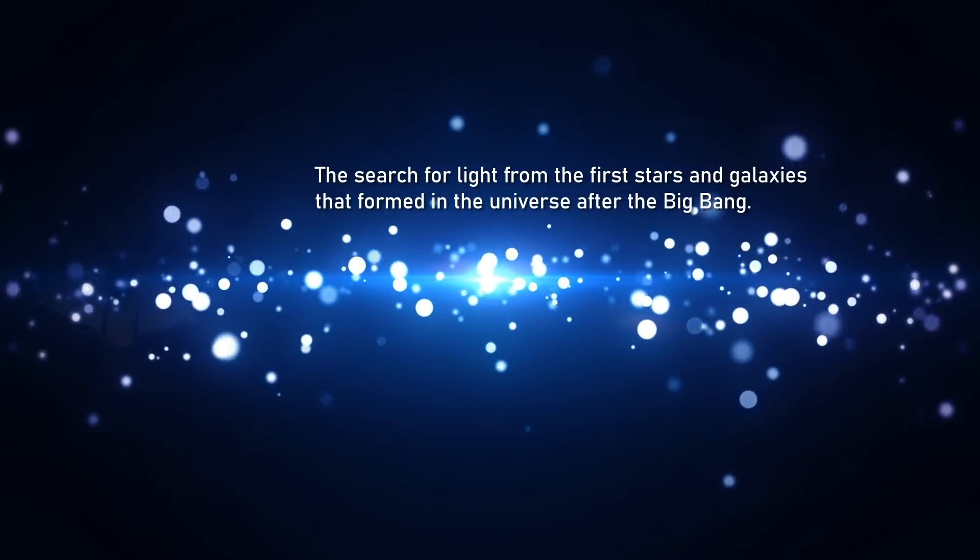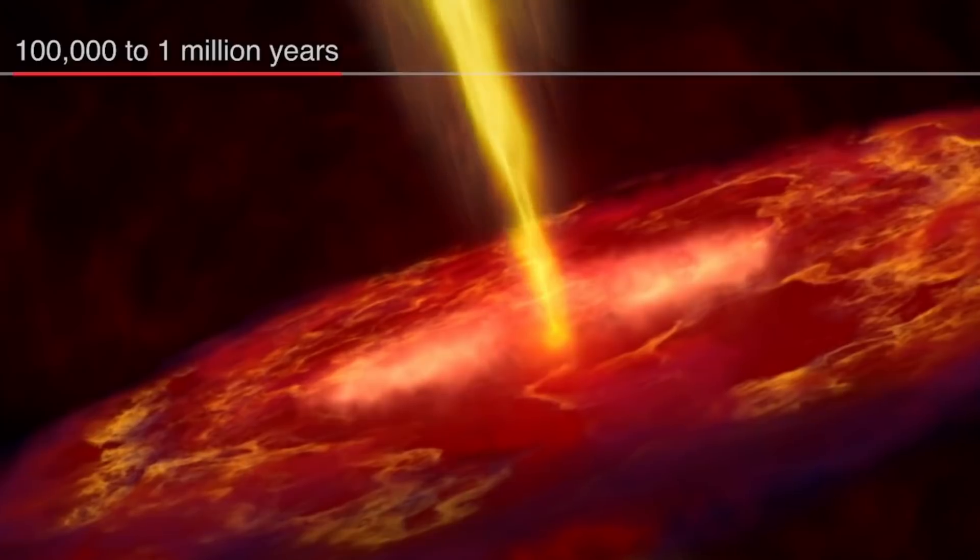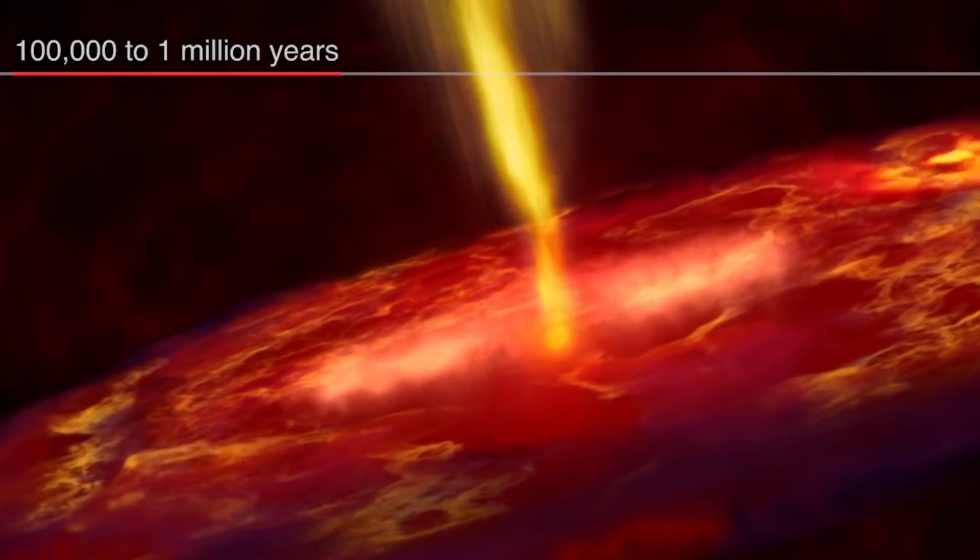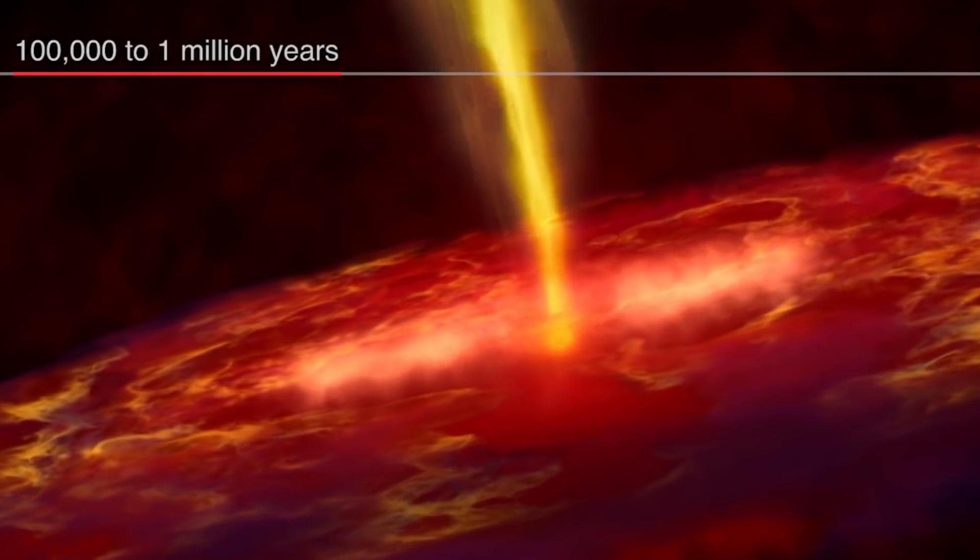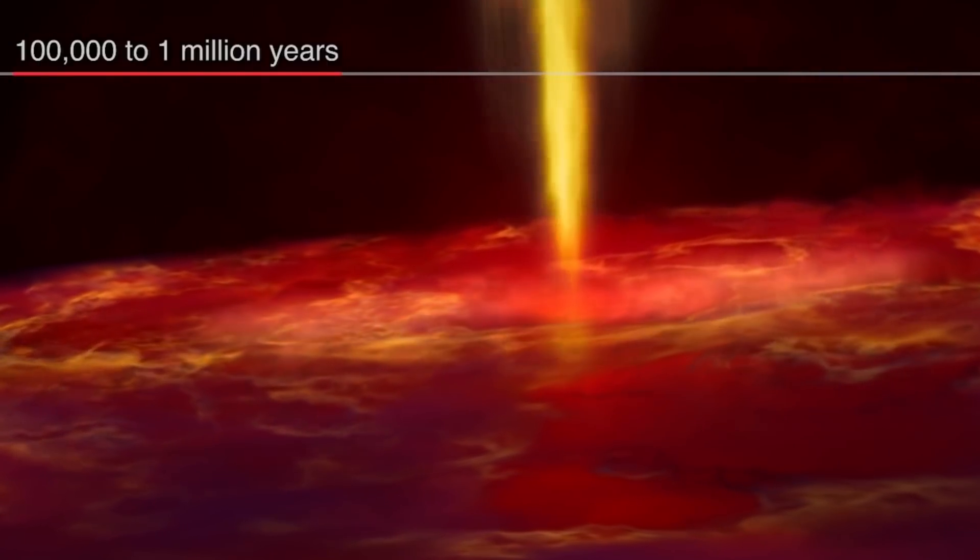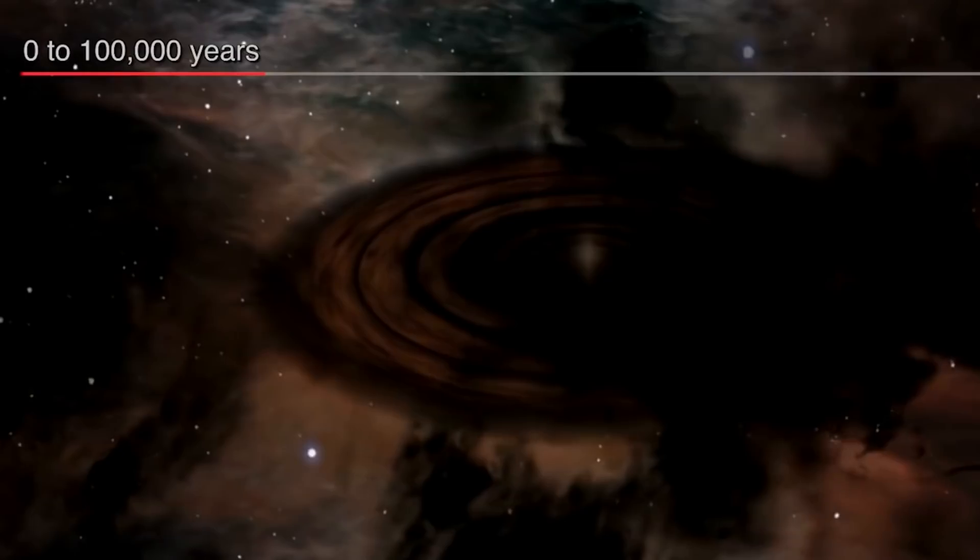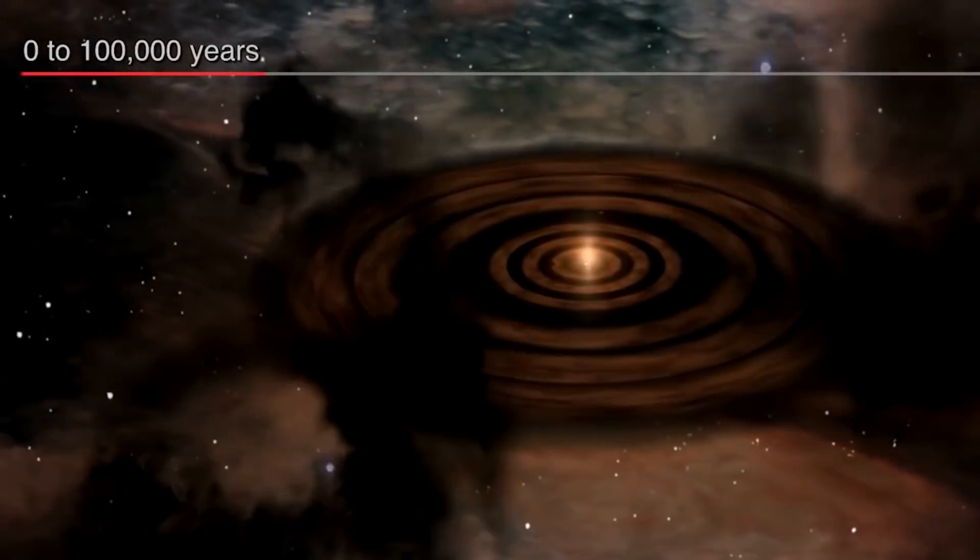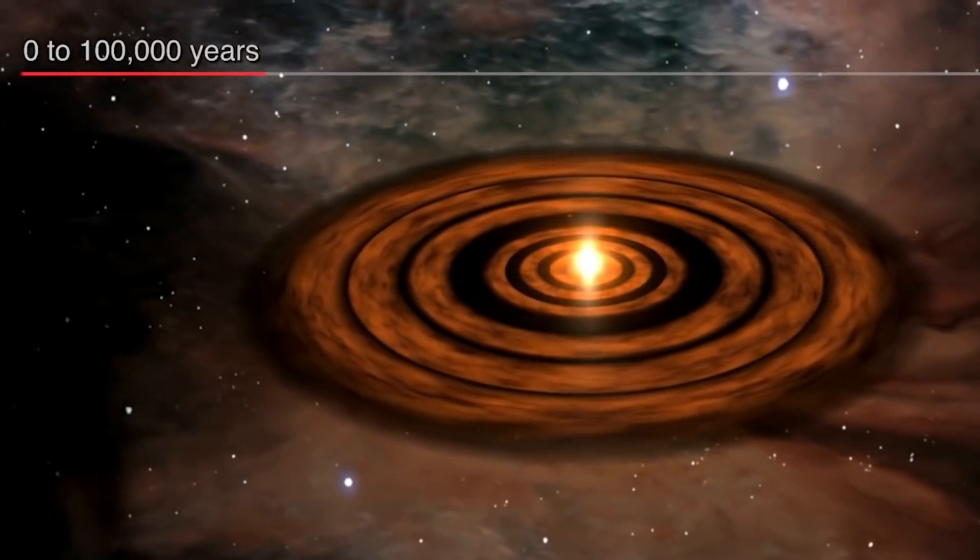In the first stages after the Big Bang, the universe was a sea of particles such as electrons, protons and neutrons. And light was not visible until the universe cooled enough for these particles to begin combining. And Webb will study what happened after the first stars formed. This era is called the Epoch of Reionization, because it refers to when the neutral hydrogen was reionized, made to have an electric charge again by radiation from these first stars.